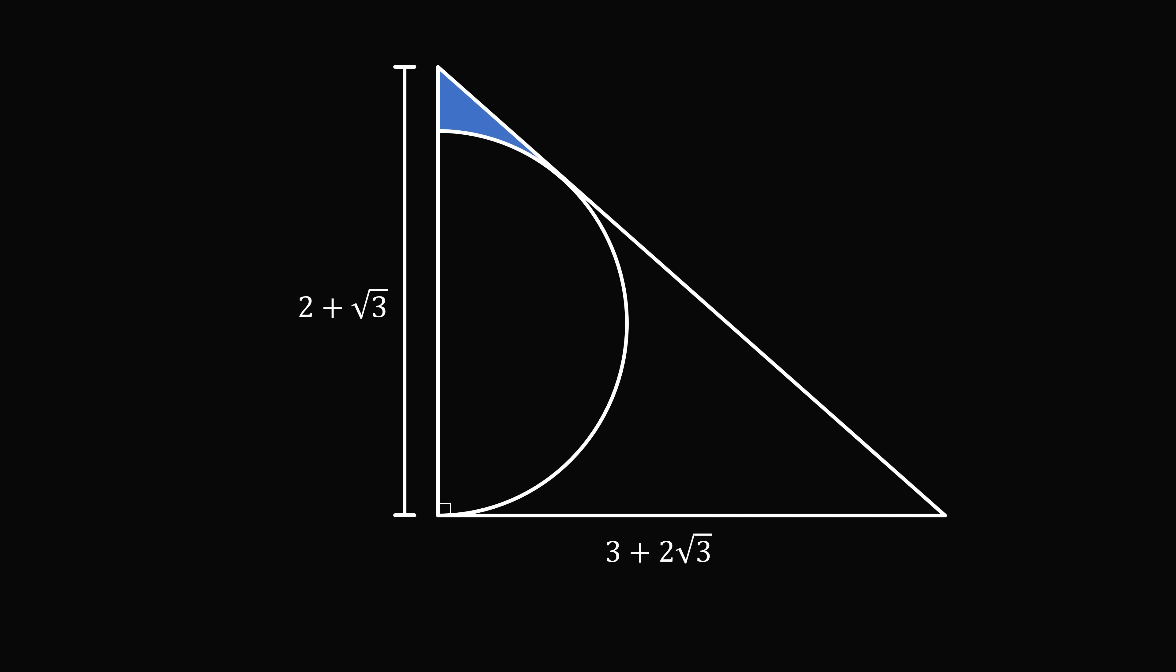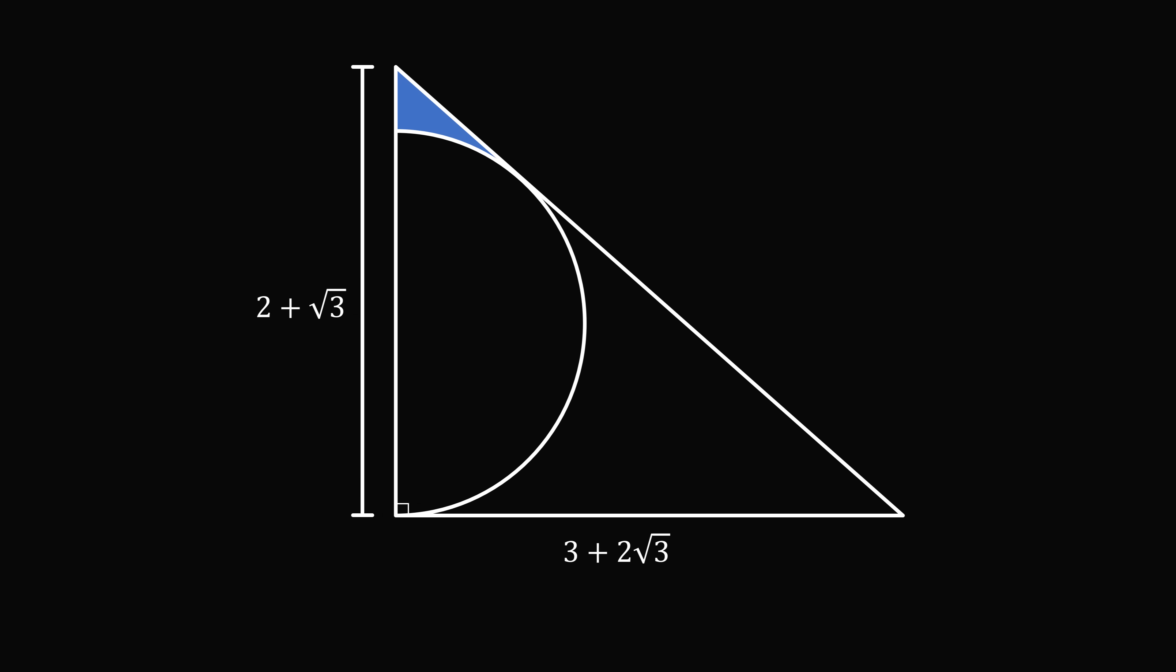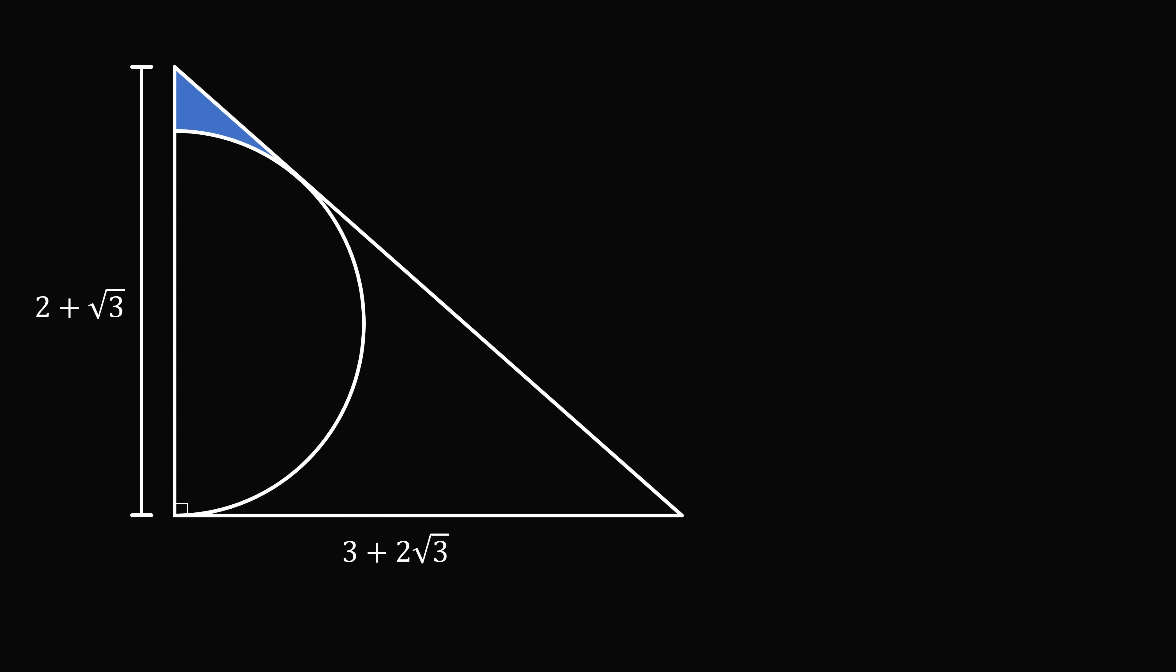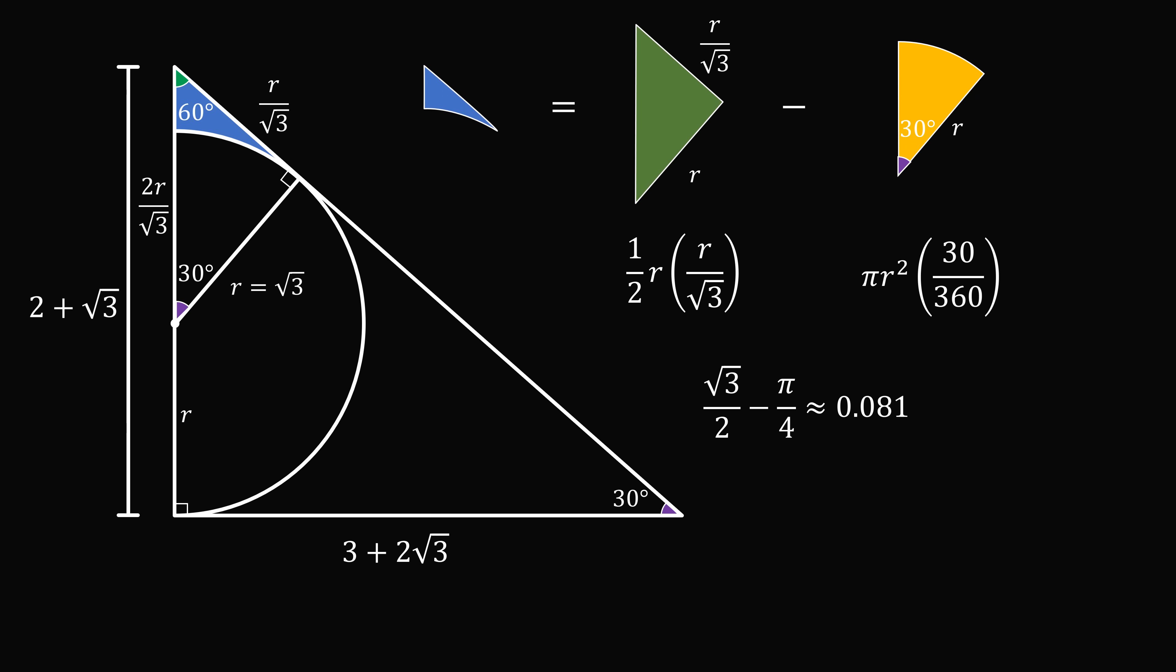As usual, there are many ways to solve this problem. For those who are just interested in checking their answer, at the risk of killing my watch time, here is one way that you can solve the problem. The area of this region is equal to the area of the right triangle minus the area of the circular sector, and this works out to be root 3 over 2 minus pi over 4, which is approximately equal to 0.081. So that's the answer.